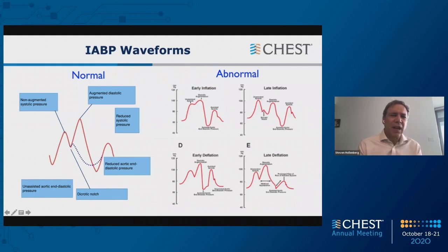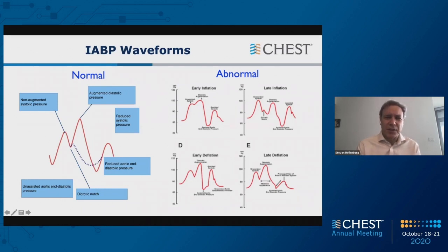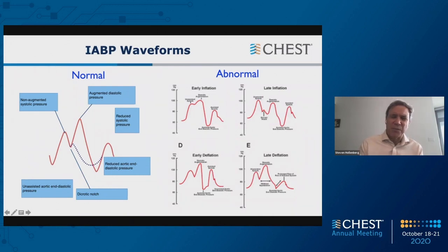You do want to look at the waveform to figure out whether the balloon pump is in the right place, although the current algorithms make this pretty easy. Normally you have a non-augmented systolic pressure. You want to time inflation to the dicrotic notch because that's when the aortic valve closes, giving you augmented diastolic pressure. In this two-to-one example, every other beat is balloon pump assisted. The next beat shows reduced aortic end-diastolic pressure — that's an indication of decreased afterload — which also reduces the systolic pressure. Abnormal timing: early inflation gets in the way of ejection; late inflation gives little augmentation. Deflating too early or too late also reduces maximal effect. That said, timing algorithms on modern balloon pumps are very sophisticated, and manually adjusting timing is uncommon these days.